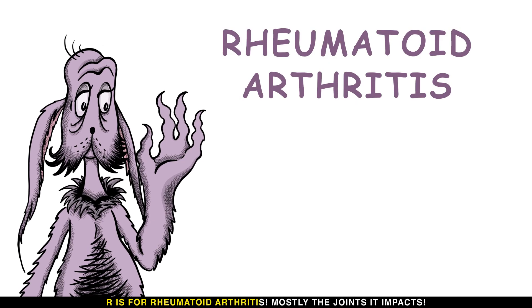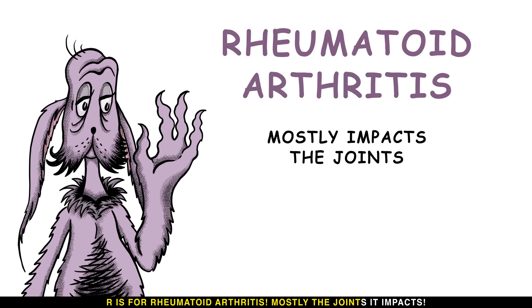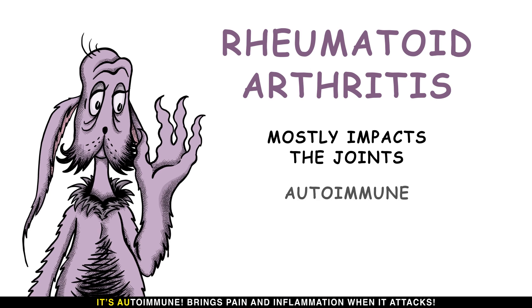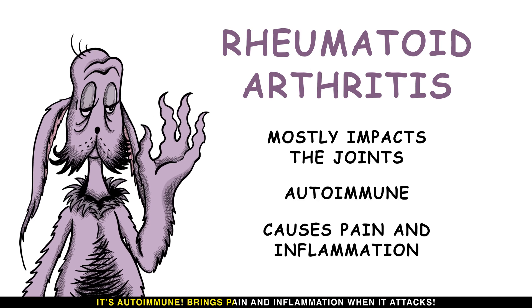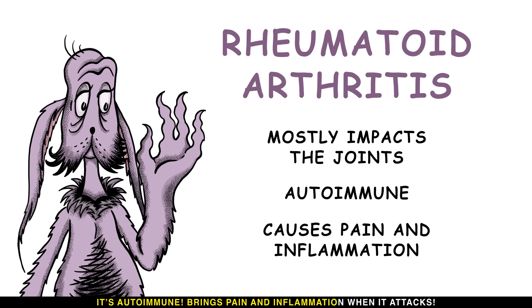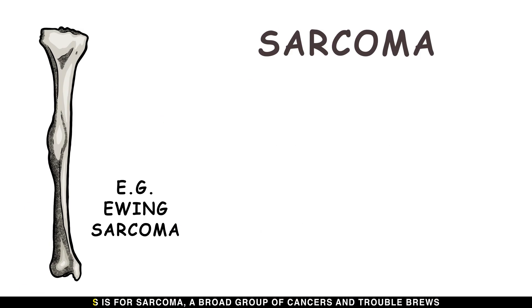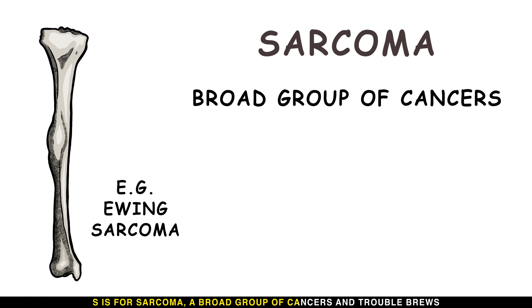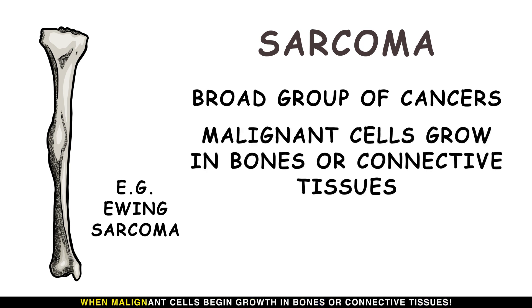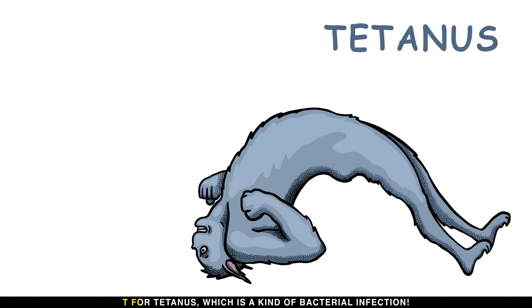R is for rheumatoid arthritis, which mostly impacts the joints. It's autoimmune and brings pain and inflammation when it attacks. S is for sarcoma — a broad group of cancers in which malignant cells begin growth in bones or connective tissues.